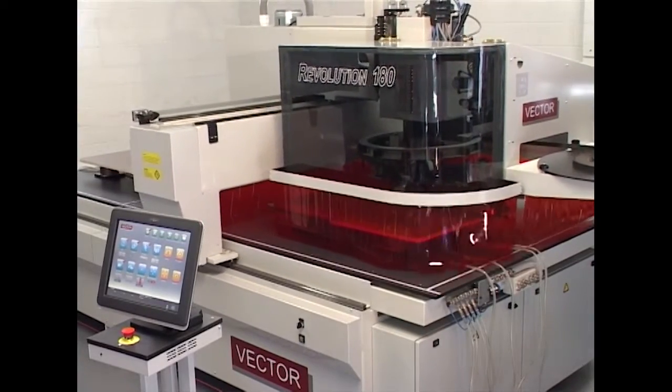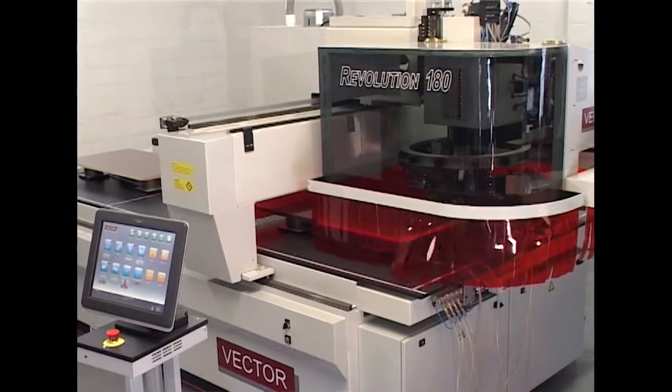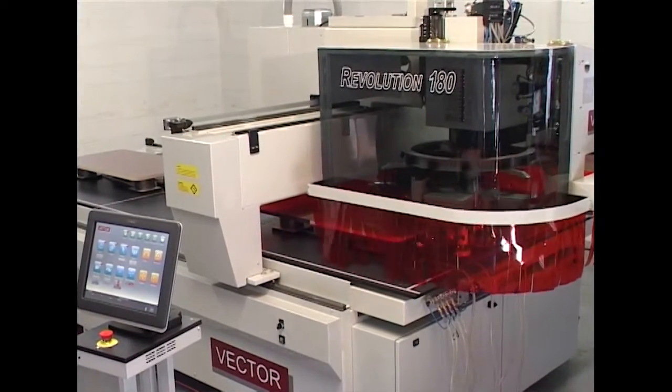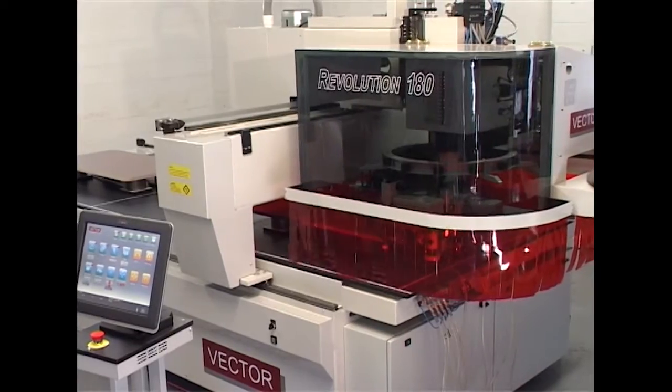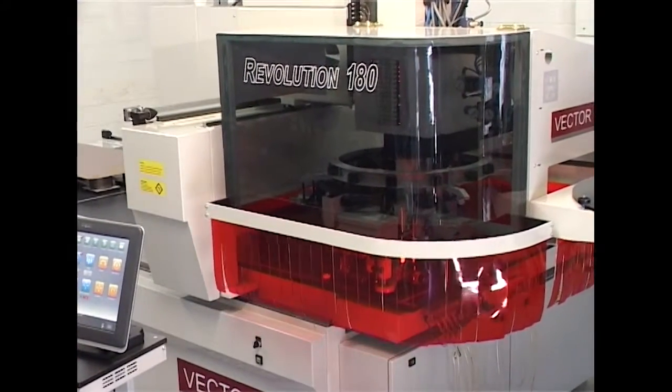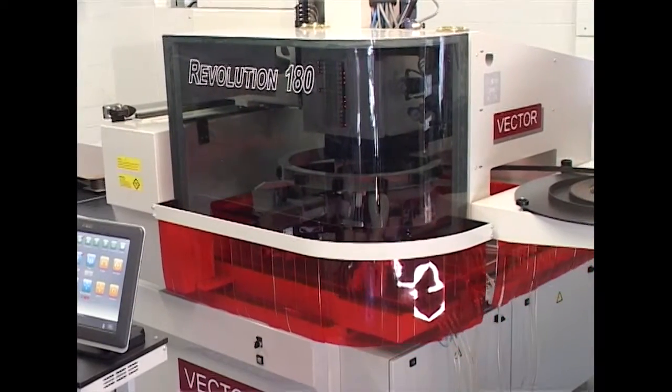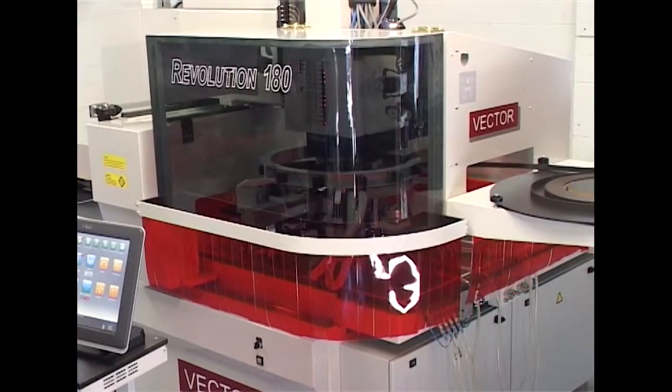The Vector Revolution 180 is a dedicated edge bander in the same way that conventional through-feed edge banders operate, which allows the separate CNC machining center and the Vector Revolution 180 to operate at peak efficiency. It also seamlessly integrates with nested based manufacturing.